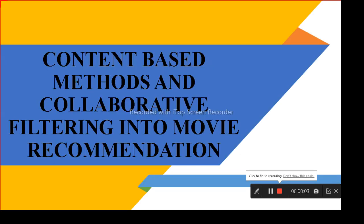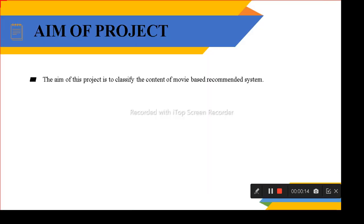Hi, today we are seeing content-based methods on collaborative filtering in movie recommendation. The aim of the project is to classify the content based on movie recommendation by using Scikit-learn, to recommend movies by classifying the content. Whatever keyword the user can give, the keyword can be analyzed, and then recommendations are produced using a filter method.